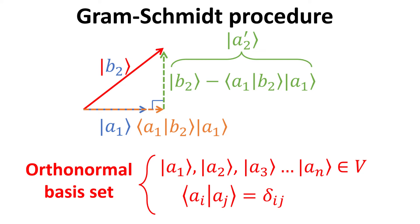If a basis set is not orthonormal to begin with, one can apply the so-called Gram-Schmidt procedure to construct an orthonormal basis set. In this video, we explain how to use the Gram-Schmidt procedure to obtain an orthonormal basis set of vectors A_j, where j goes from 1 to n in n-dimensional vector space.